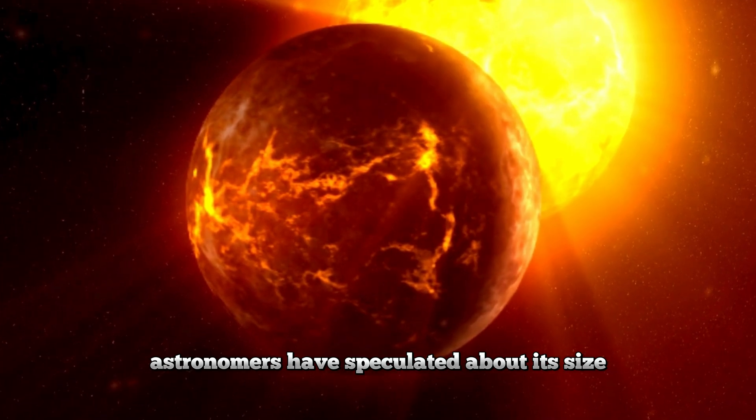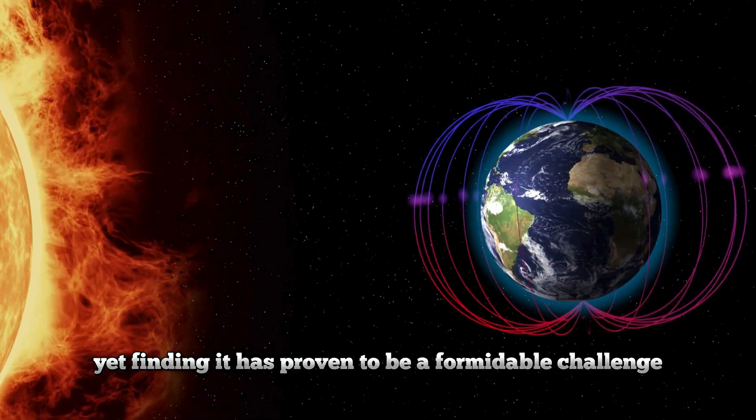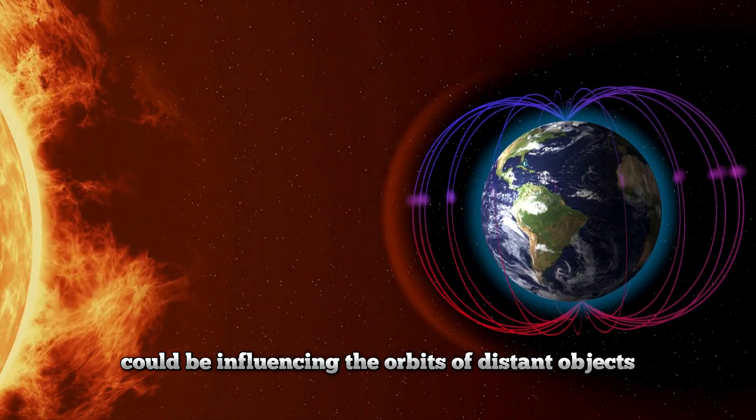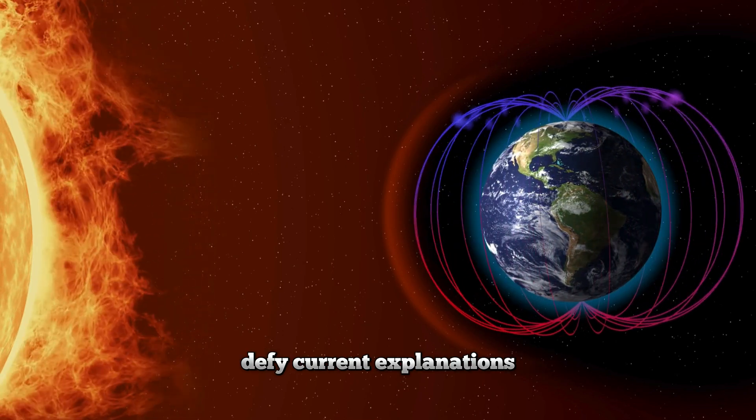Astronomers have speculated about its size, distance, and orbital path, yet finding it has proven to be a formidable challenge. This giant planet could be influencing the orbits of distant objects, causing them to behave in ways that defy current explanations.